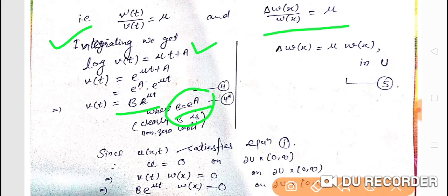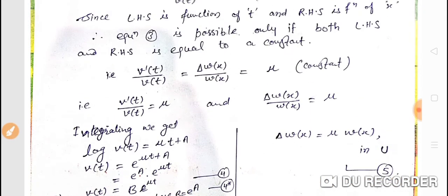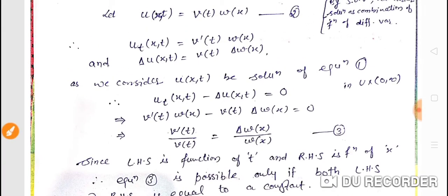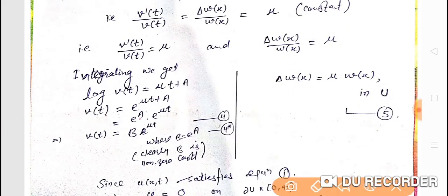On the right hand side we had delta w over w equals mu, which means delta w equals mu times w in u. Since u(x,t) is the solution of equation one, and w is a function of x, we have delta w equals mu w in u.